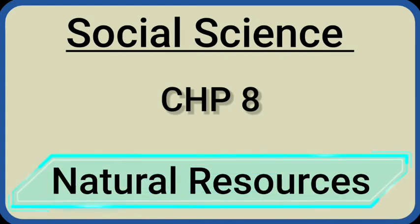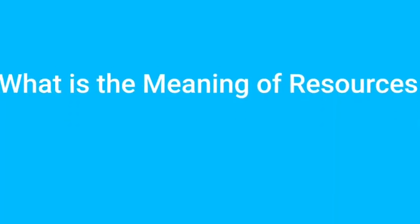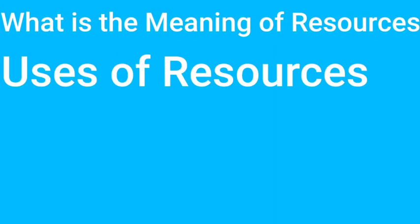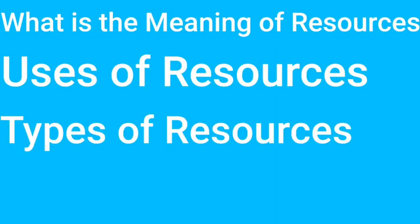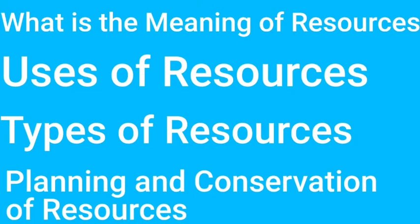Hello dear students, have a good day to all. Today I am here to teach you the 8th chapter from your social science textbook. The name of the chapter is natural resources. In this session we are going to learn what is the meaning of resources, uses of resources, types of resources, and planning and conservation of resources.